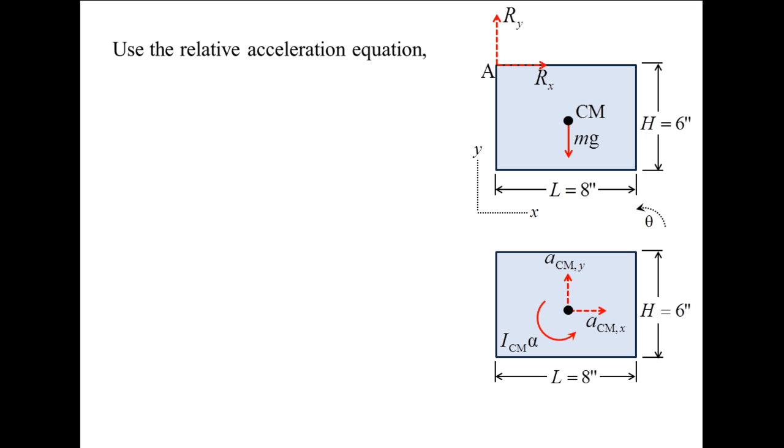We can obtain two additional equations by examining the relative motion between point A and the center of mass. The acceleration of the center of mass is equal to the acceleration of point A plus the acceleration of the center of mass relative to point A. The relative term is decomposed into tangential and normal components. The tangential component is alpha cross RCMA, the position vector pointing to the center of mass from point A. The normal component is the angular velocity of the plate, omega, cross the quantity omega cross RCMA. The acceleration of point A is zero since that point is fixed. The angular velocity also is zero at that instant since the plate starts from rest.